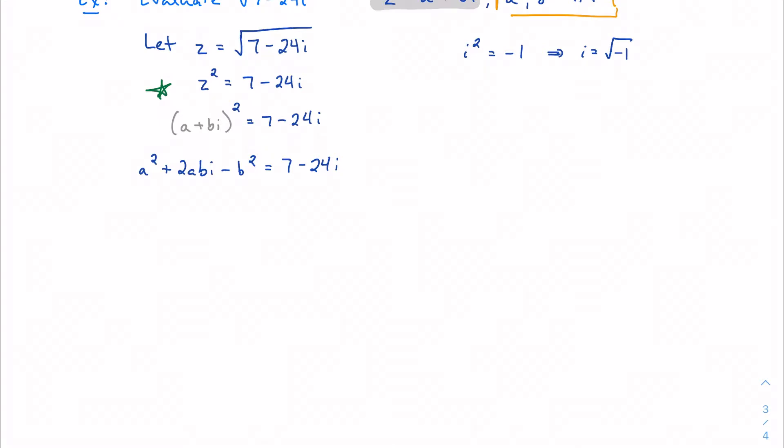We've got a rule which is when two polynomials, or in this case two complex numbers, are equal to each other, I can equate constants and variables. In this case, I can equate real parts and imaginary parts. So we're going to equate real and imaginary parts, and this is going to give us a system of equations.